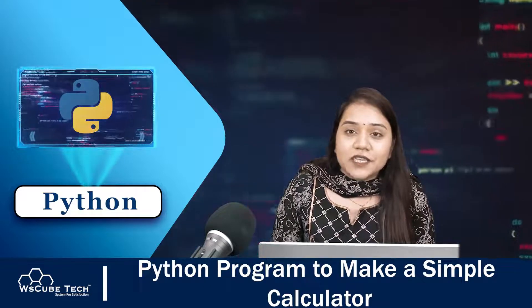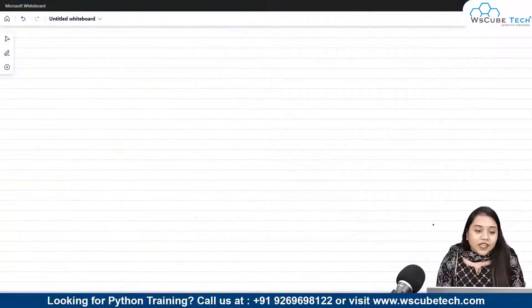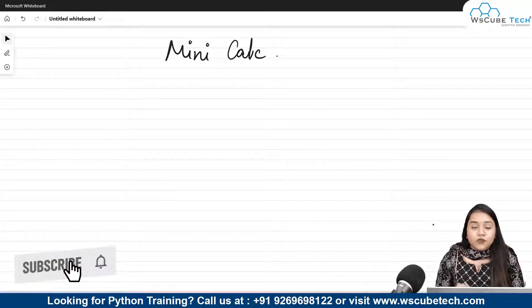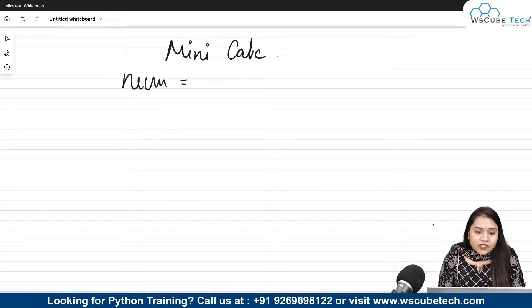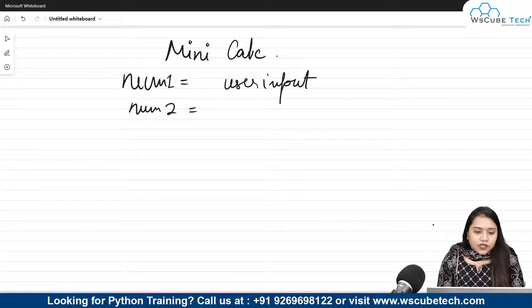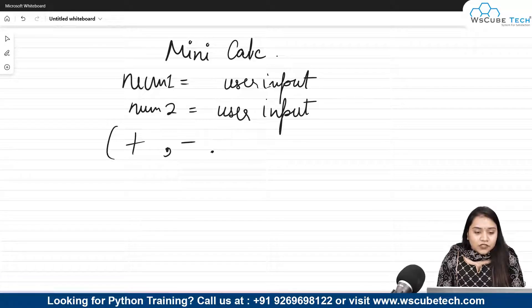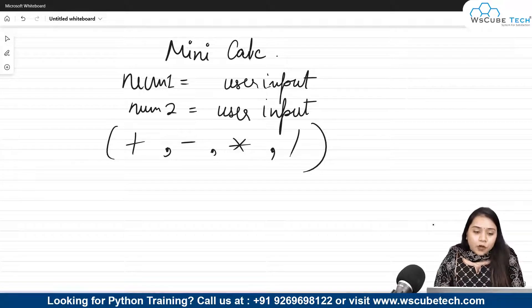First of all, let's write down the steps we will need to create a calculator. We will start by printing 'Mini Calculator' at the top. After that, we will take input from the user for two numbers — number one and number two. Then we need to give the user options: addition, subtraction, multiplication, and division. These four operations will be created because it's a simple calculator.